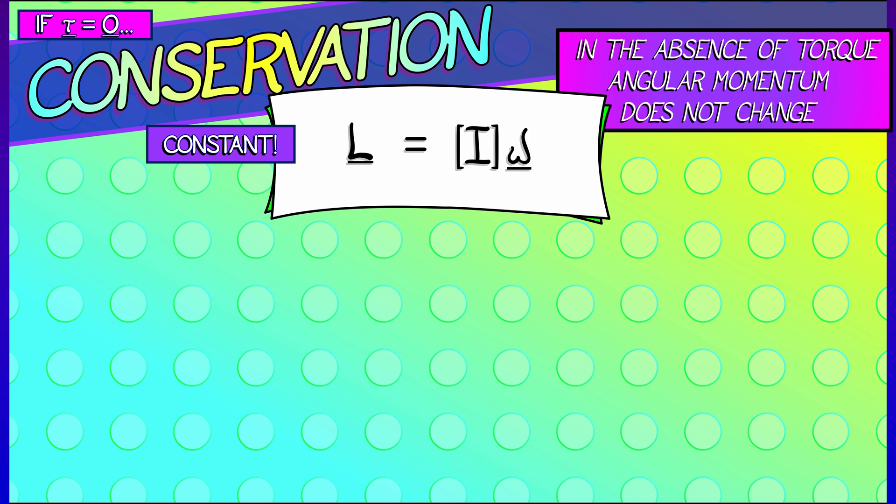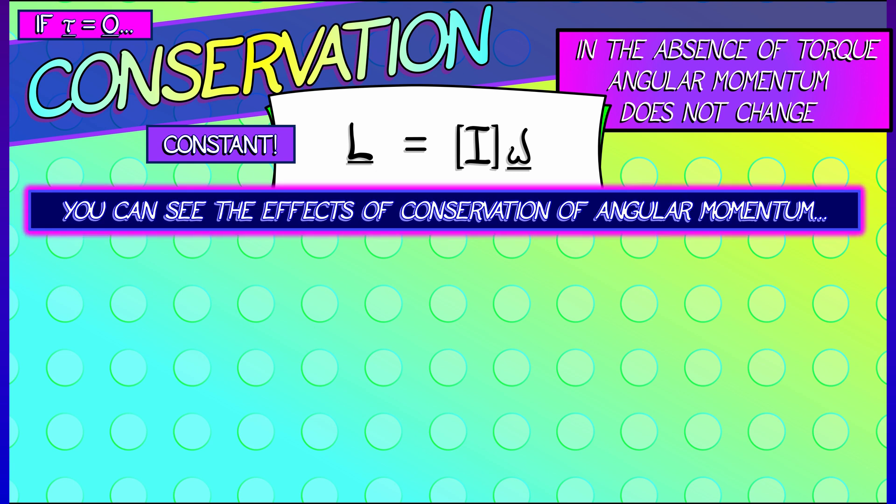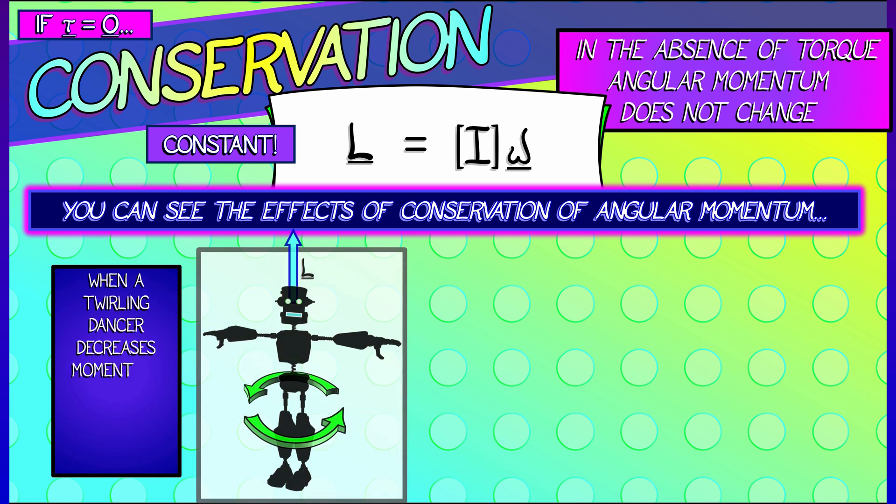So in this setting, you can see the effects of conservation of angular momentum in lots of different places. For example, if you have a twirling dancer that is spinning around,